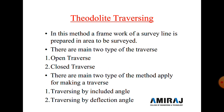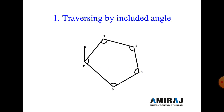Next we start the topic of theodolite traversing. In this method, a framework of survey lines is prepared in an area to be surveyed. There are two types of traverse: open traverse and closed traverse. Two methods are applied for making a traverse: traverse by included angle and traverse by deflection angle.